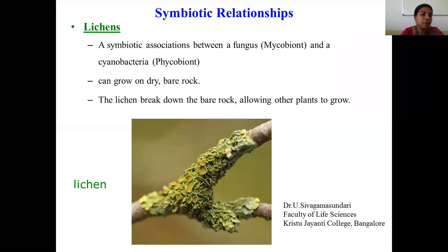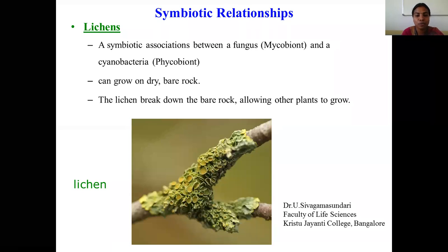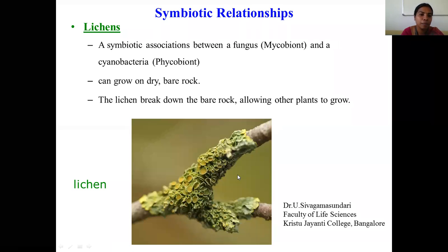Lichen members can grow on dry bare rock, and because of that capacity they can break down the bare rock, allowing other simple plants to grow. This is a picture of lichen showing the symbiotic association between the fungal partner mycobion and the algal partner phycobion.